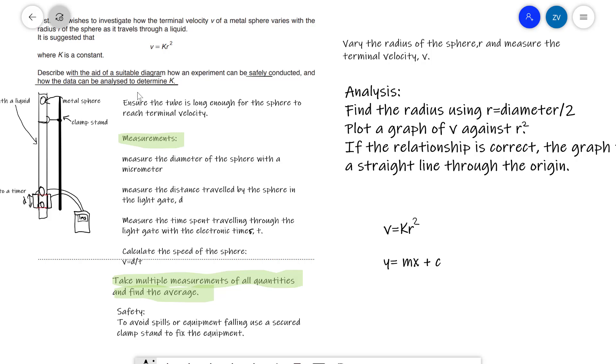Now, part of this question is asking us how can the data be analyzed to determine the value of k in this equation. Remember, we have measured v, we've measured the diameter. So the first thing that we need to do would be to find the radius for each of our radii in our table of results using the fact that r is the diameter over 2. This may sound as something relatively simple, but you'll be surprised when this experiment is actually done how easy it is to forget that what you're measuring is actually the diameter and not the radius.